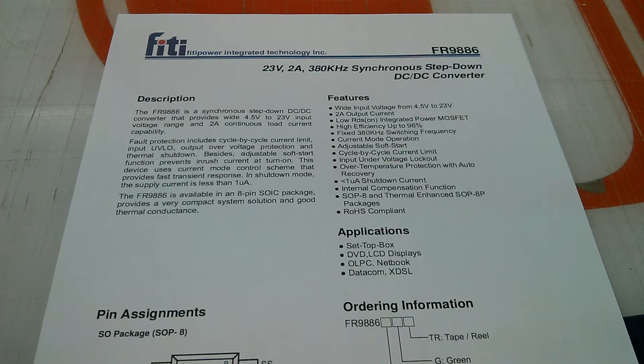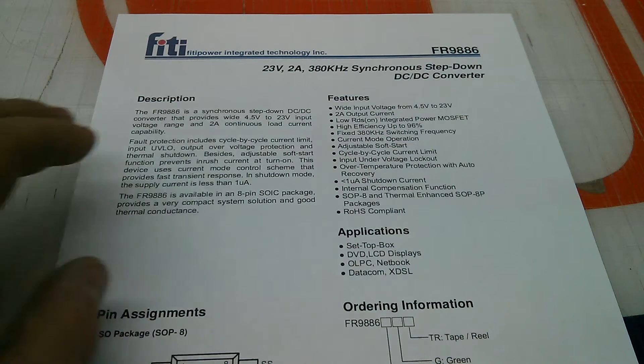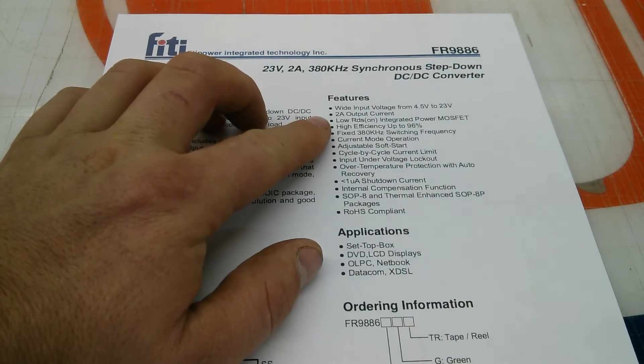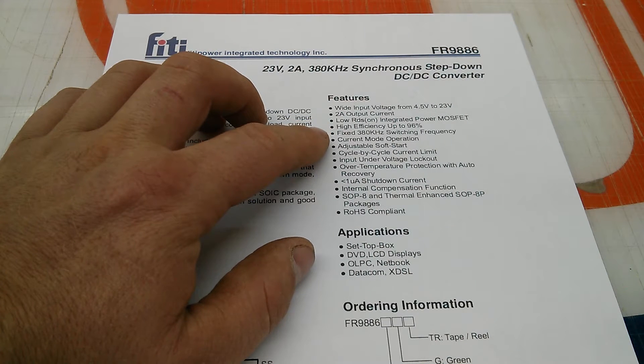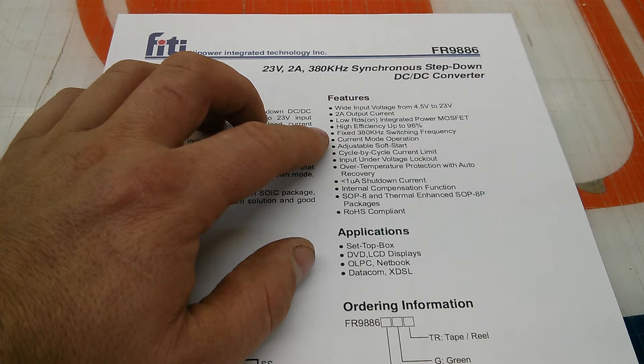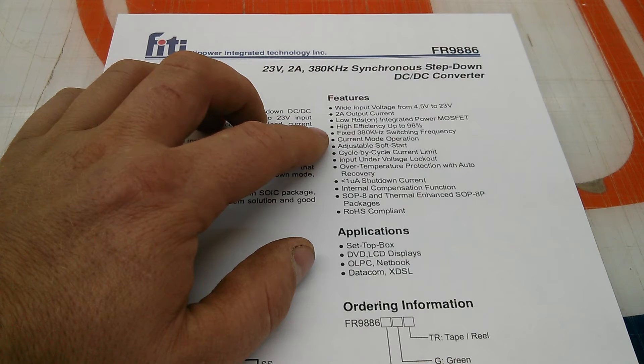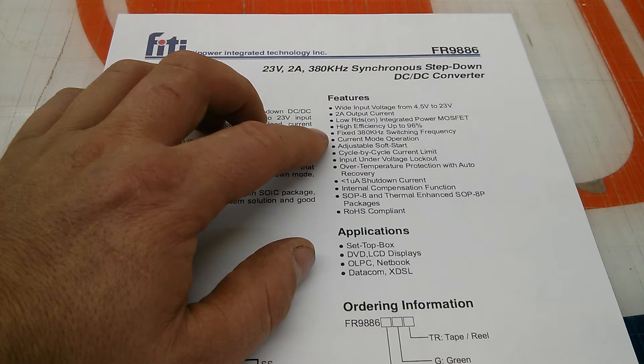They claim it has up to 23 volt input, 2 amp output. It's got integrated MOSFETs, 380 kilohertz switching frequency, which is how with a 2 amp regulator, they can get away with such a small inductor.